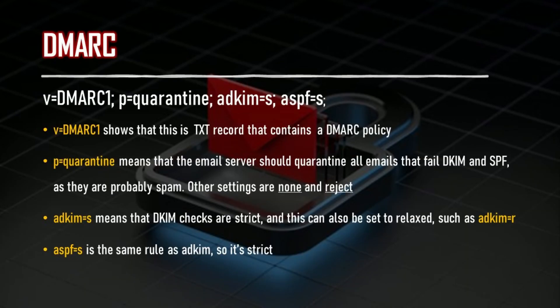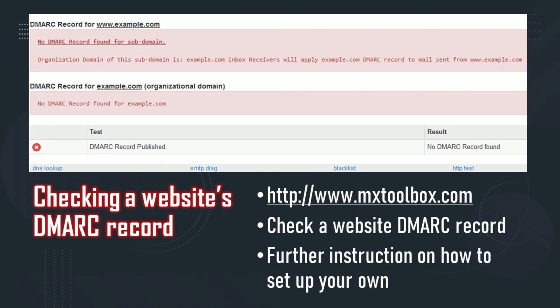Here's a DMARC policy example — let's break it down. V equals DMARC1 shows that this is a TXT record containing a DMARC policy that should be interpreted by the email server. P equals Quarantine means the email server should quarantine all emails that failed DKIM and SPF, since they're probably spam. ADKIM equals S means that the DKIM checks are strict — this can also be set to relax by changing S to R. ASPF equals S is the same rule, so it's also strict. A cool website you can check out is mxtoolbox.com, where you can see what kind of DMARC setup a website has and find instructions on how to set up your own. I'll leave that and other links in the description below.